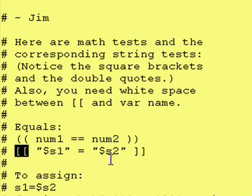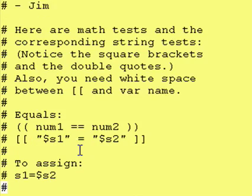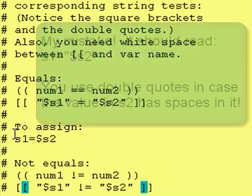So once again, using the double square brackets, using dollar signs for variable substitution, and you're using a single equal sign. So for equals, the equal test is an equal sign.